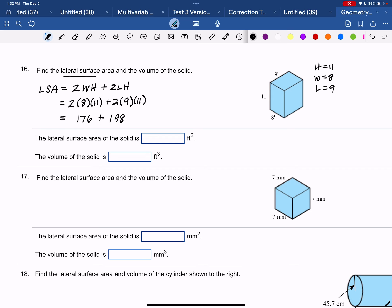So the lateral surface area when you add those two together is 374. Because we're area, we're in square feet.